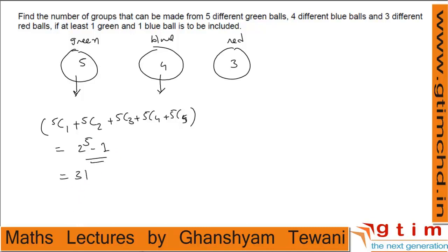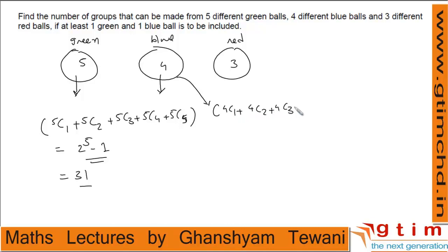There are 31 possibilities for selecting green balls — selecting 1, 2, 3, 4, or all 5 green balls. Since the green balls are different, the choice of which 2 (or more) to select matters. For blue balls, the condition is at least 1. So the options are 4C1 + 4C2 + 4C3 + 4C4, which equals 2 power 4 minus 1 = 15.